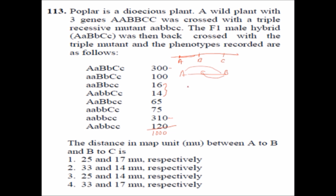Regarding the double crossover: if we have chromosomes uppercase A-B-C and lowercase a-b-c undergoing a double crossover, it means one segment gets the recombined arrangement. For example, uppercase A takes the lowercase b segment, and then retains its own uppercase C, giving a product like A (small b) C. The other chromosome inherits the complementary recombined segment.